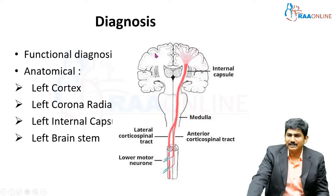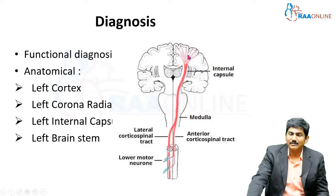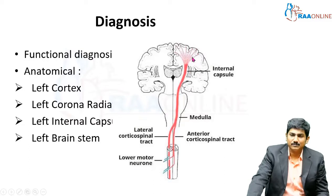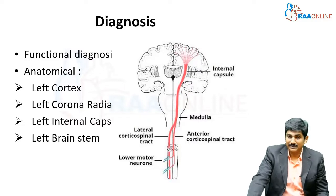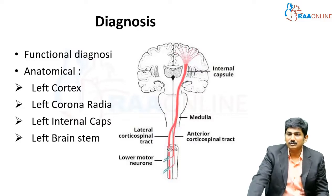What if it is the corona radiata? In the corona radiata, the fibers are actually dispersed. So a small ischemic stroke at this region is less likely to affect both the upper and lower limbs equally. Our patient had a power of 2/5 in both upper and lower limbs — this means equal involvement of upper and lower limbs, so it is more likely to be the internal capsule.